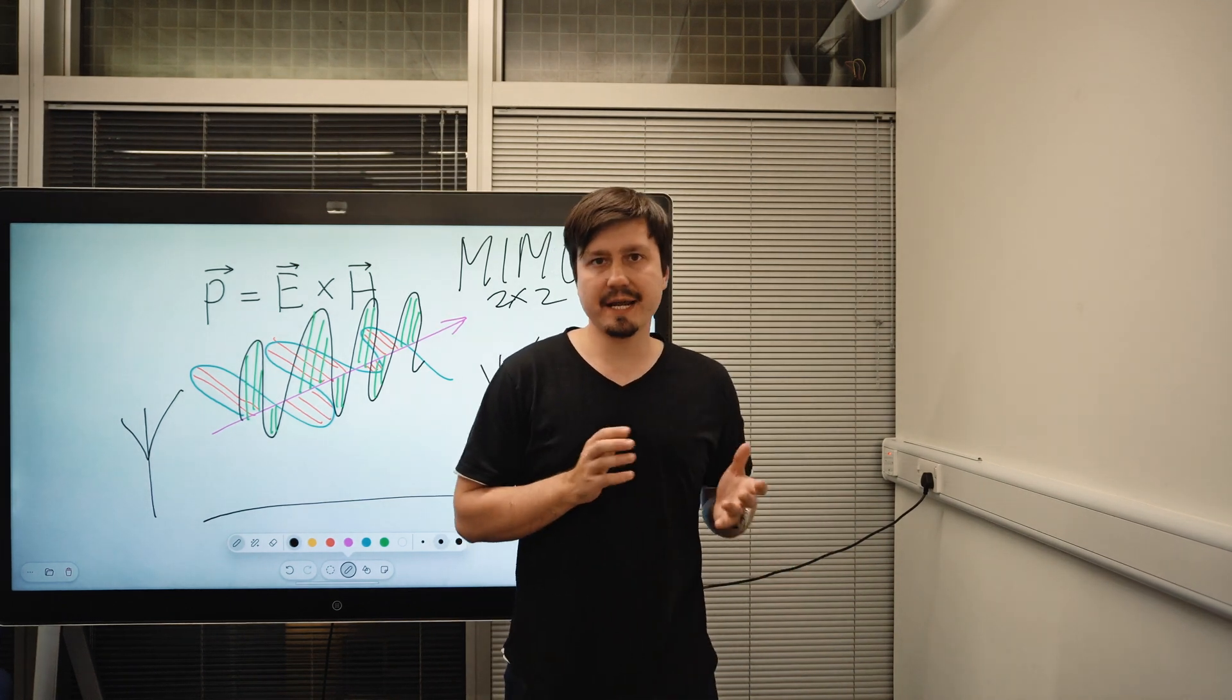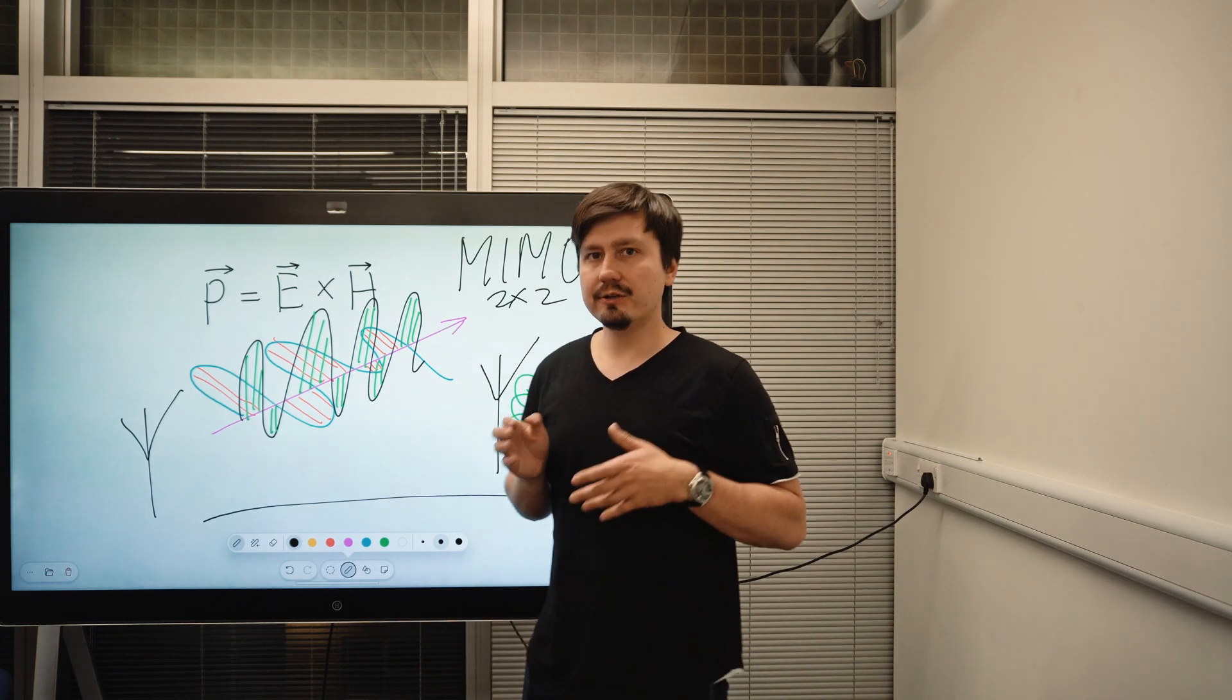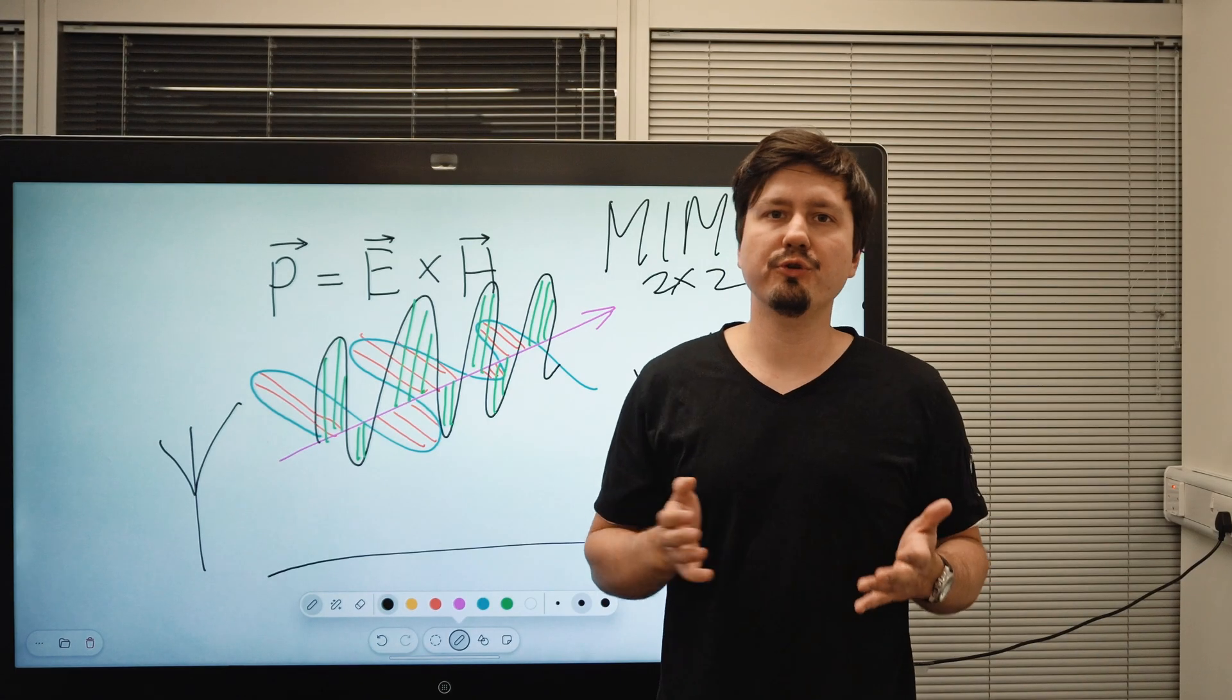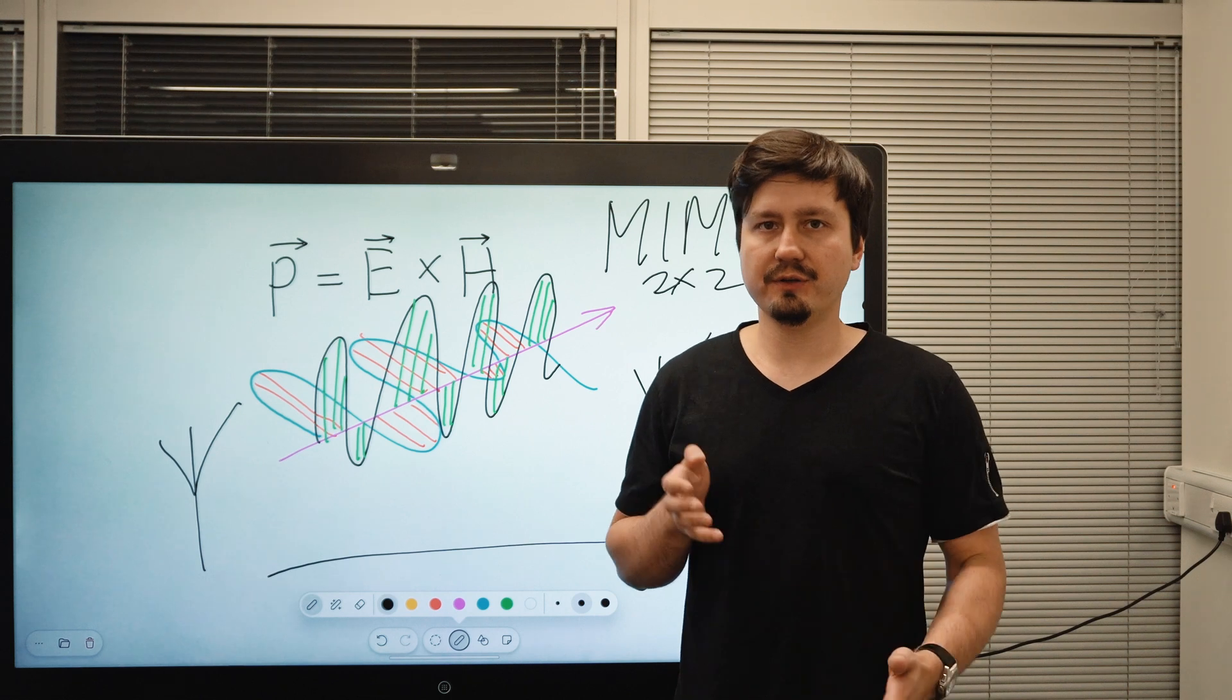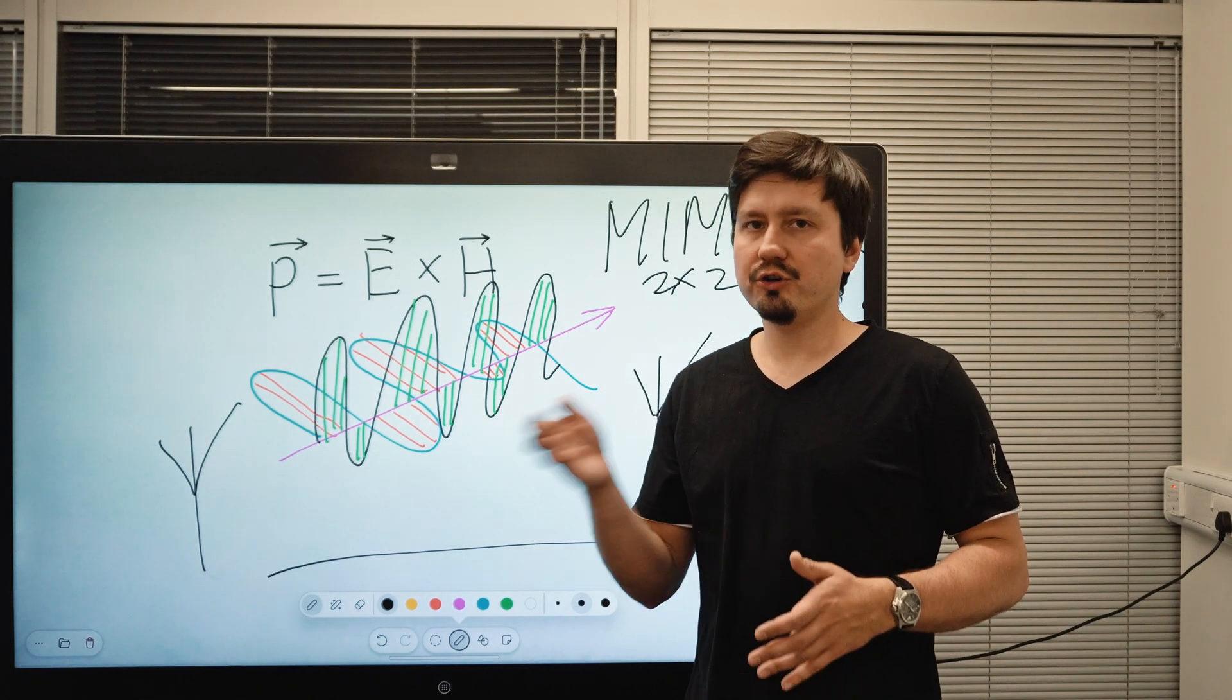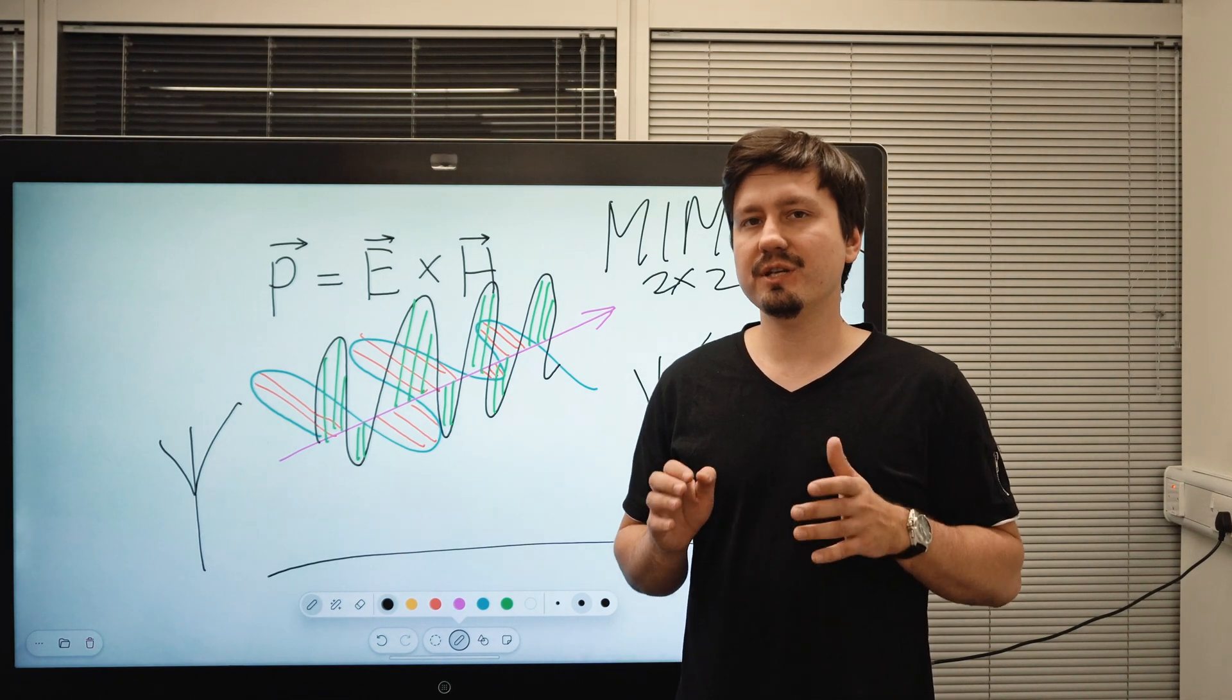And basically, in a multi-path-rich environment, where you have many reflections bouncing up and down, you are likely to receive both. So effectively, you will double the amount of information you're sending. Of course, you could also play this trick with circular polarized waveforms. And you can transmit both right-hand polarized and left-hand polarized waveforms simultaneously, as well as, on top of that, linearly polarized waveforms, which all makes it very interesting when you want to transmit multiple streams simultaneously.